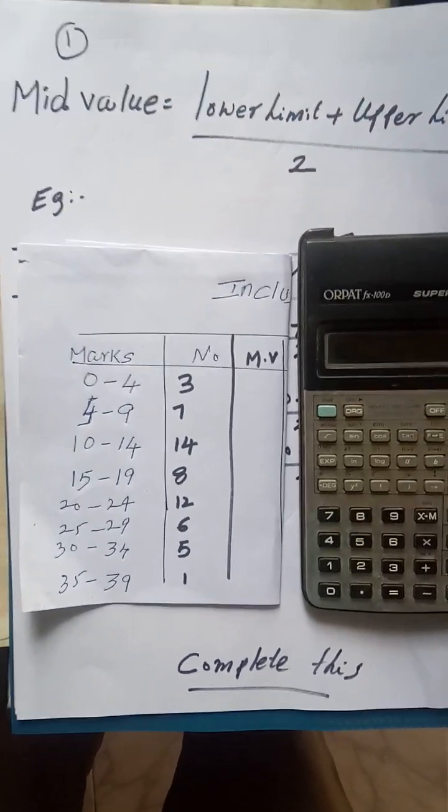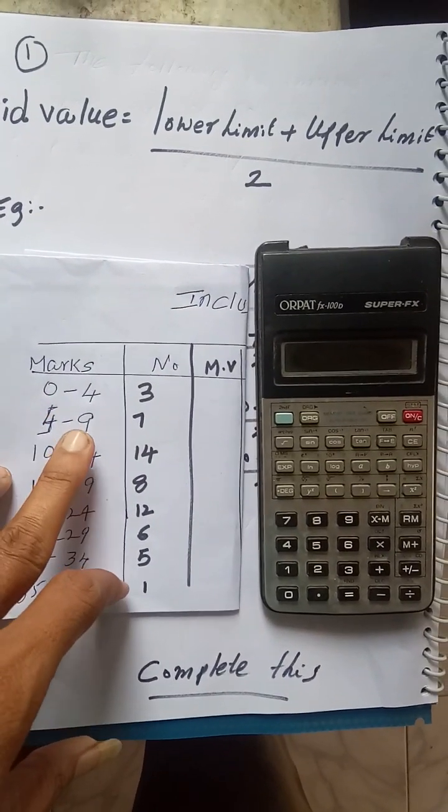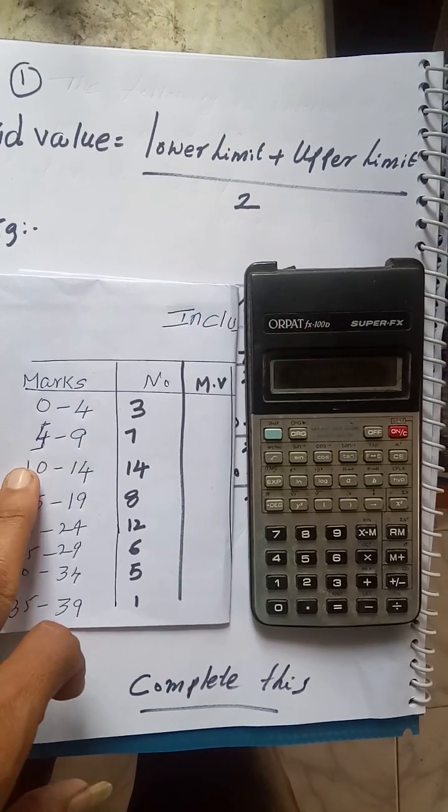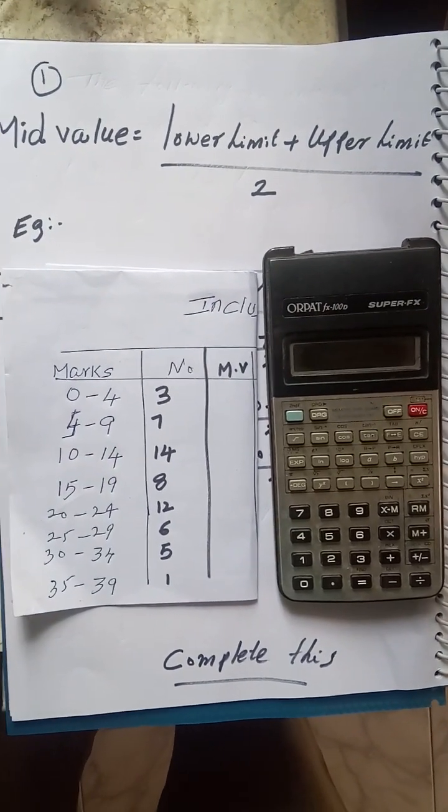0 plus 4 divided by 2, 5 plus 9 by 2, 10 plus 14 by 2, and likewise.